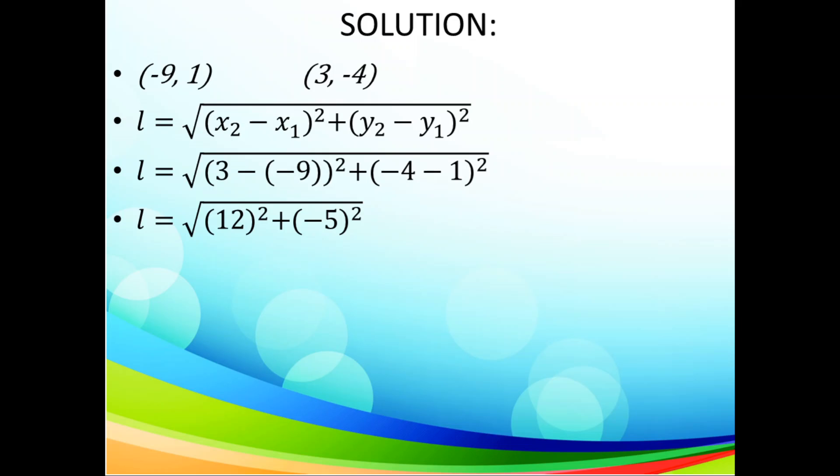So when we square that, 12 squared is 144. And negative 5, when you square that, will give you a positive 25. Keep in mind that whenever you square a negative number, it will always give you a positive number, because a negative times a negative is equal to a positive.